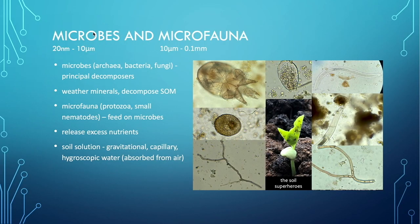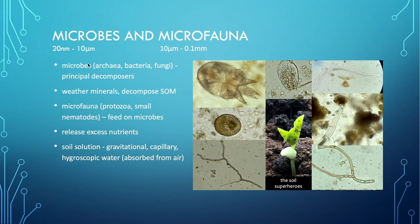Looking at microbes and the microfauna that feeds on them, the 'State of Knowledge of Soil Biodiversity' organizes everything by size. Between 20 nanometers and 10 micrometers you've got the microbes — bacteria and archaea are very related and are the tiniest things besides viruses, which scientists sometimes don't even call life forms since they're a bit of protein around a DNA molecule. These tiny organisms degrade rock and organic matter, get sugars from the plant, weather the minerals, and decompose the soil organic matter, before being eaten by slightly larger organisms.